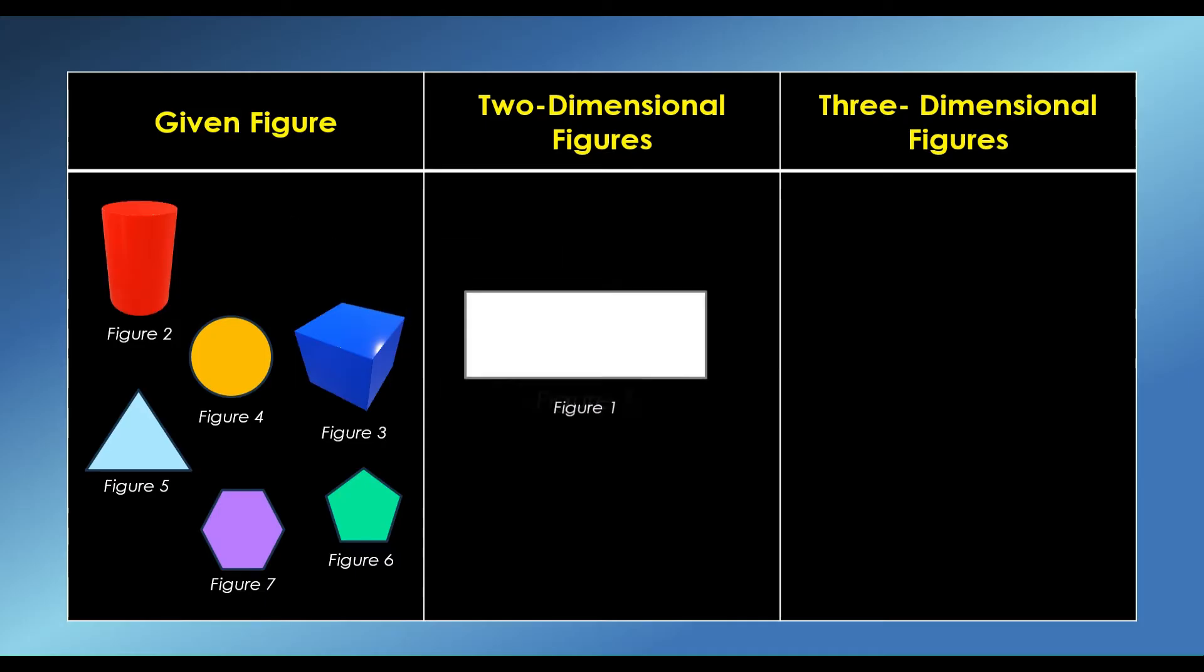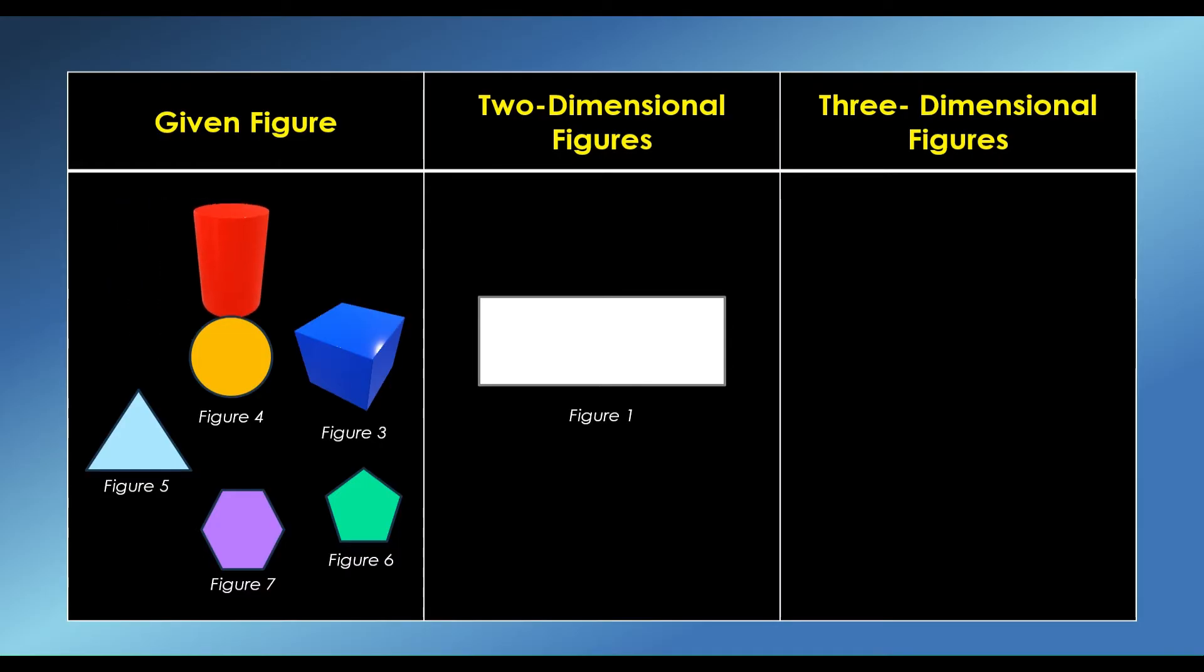The first figure we have is rectangle. Rectangle is a 2D shape that has four sides, where the opposite sides are equal and parallel to each other.